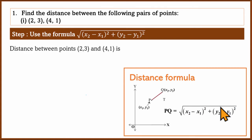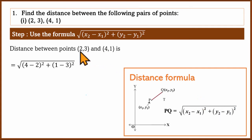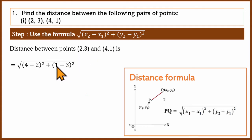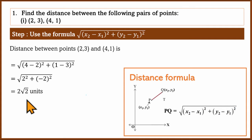The points are (2, 3) and (4, 1). So x1 is 2, x2 is 4, y2 is 1 and y1 is 3. We compute (4 minus 2) squared plus (1 minus 3) squared under the square root. This gives us the final answer.